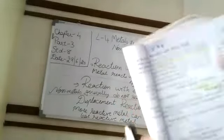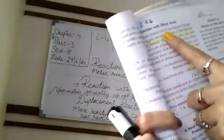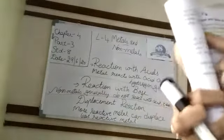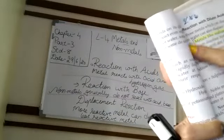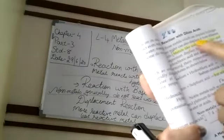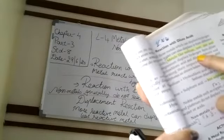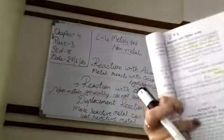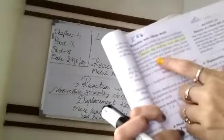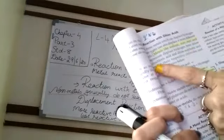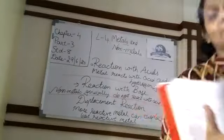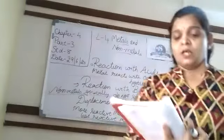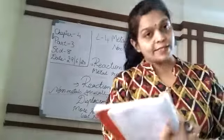All those metals which can displace hydrogen from water can also displace it from acids. Metals like sodium, iron, zinc, and magnesium displace hydrogen from dilute hydrochloric acid and dilute sulfuric acid, forming their respective chlorides and sulfates.